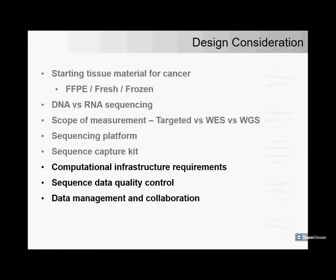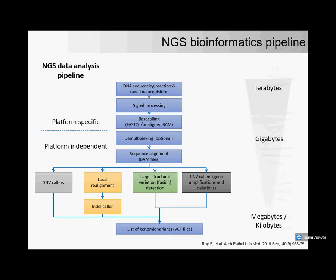In terms of design considerations after making up my mind on sequencing platform and capture kit, the next thing was computation. Once you have the data, what do you need to understand about the data itself? How do you manage the infrastructure locally? What kind of sequence data quality control do you need to keep in mind to ensure the data is robust? And what about data management and collaboration? This is a very high-level simplified overview of what data analysis for any kind of NGS data looks like.